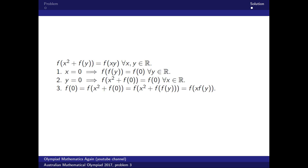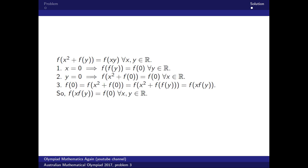Then we apply again the original condition of the problem — what is written on top — applying it to the numbers x and f of y. This gives us f of the product of x and f of y. So we have proved that f of the product of x times f of y is always equal to f of zero for any x and y.